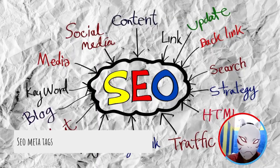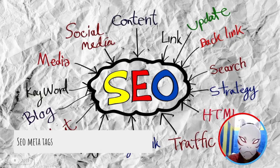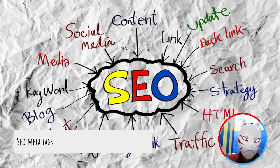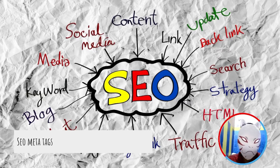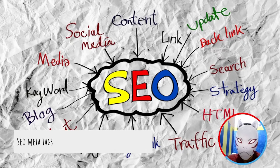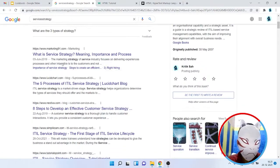With SEO meta tag generation, we can provide different keywords, blog description, page description, content description, and social media images — so when you share your link on social media, it gives a description about that link and provides an image for it.